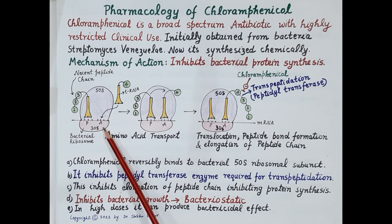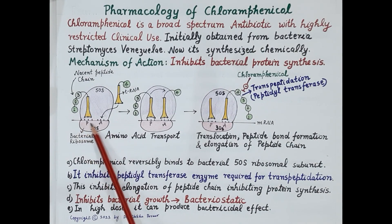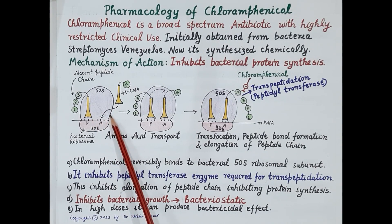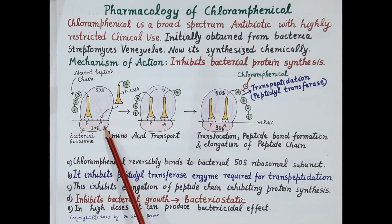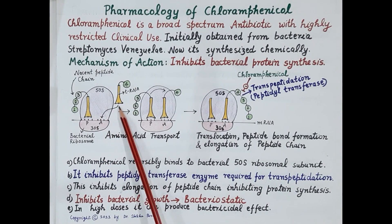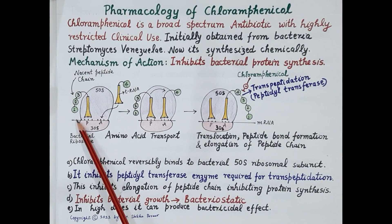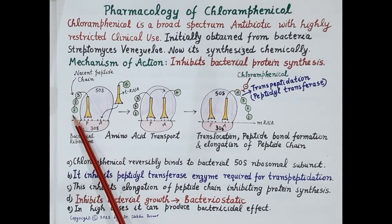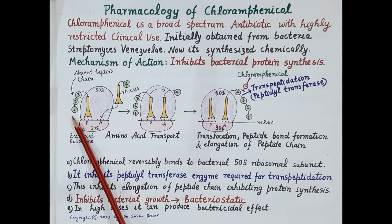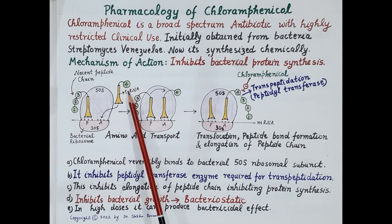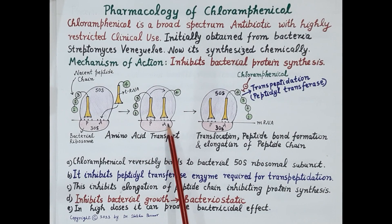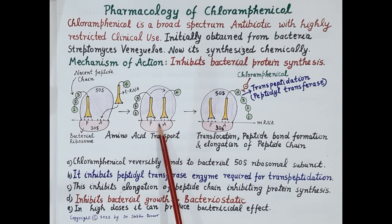Messenger RNA attaches itself to the 30S subunit of the bacterial ribosome. The 50S subunit has two sites: the P (peptidyl) site and the A (acceptor) site. Transfer RNA carries amino acids. A nascent peptide chain being formed is attached to the P site. The next amino acid is transported to the A site by a specific transfer RNA as per the codon of messenger RNA.